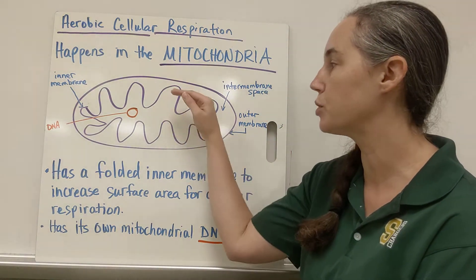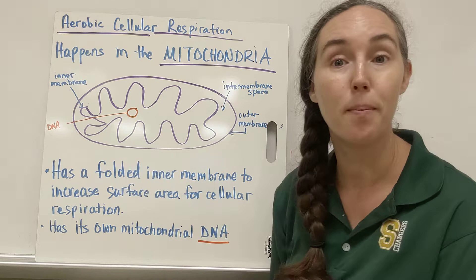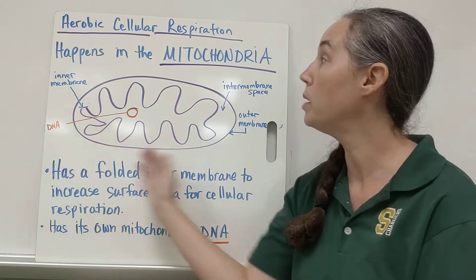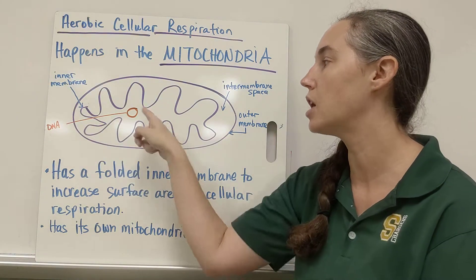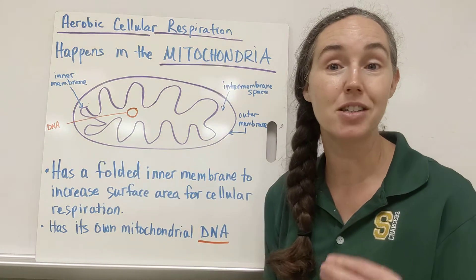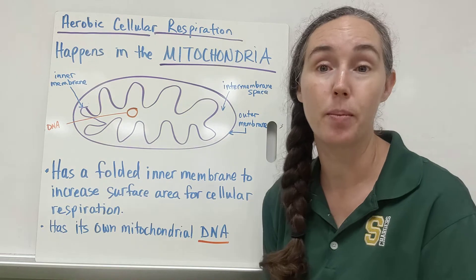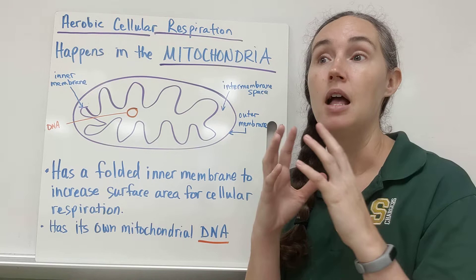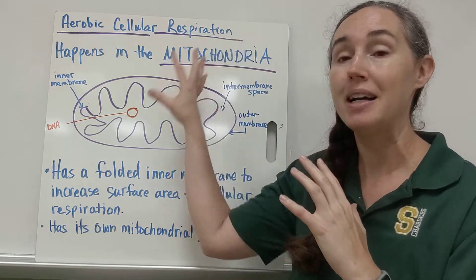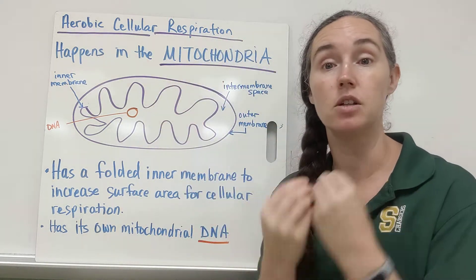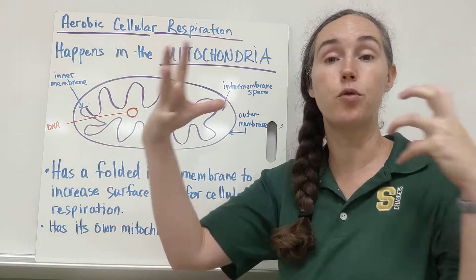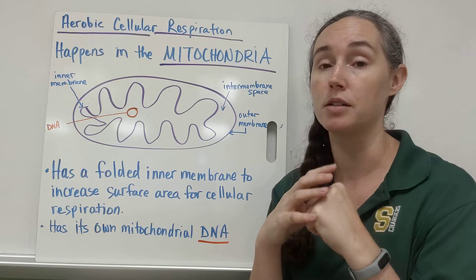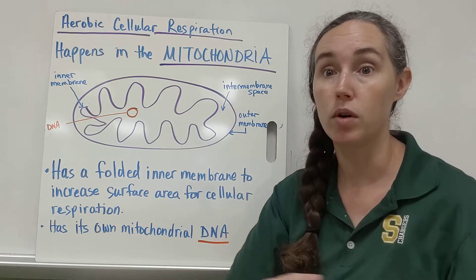Another thing you'll find in mitochondria is its own mitochondrial DNA. The fact that the mitochondria is a double membrane organelle with its own DNA is actually evidence for endosymbiotic theory. Endosymbiotic theory is the explanation that mitochondria used to be its own prokaryotic organism that then formed a symbiotic relationship with another prokaryotic organism, and that was one of the first steps to eukaryotic organisms coming to be.